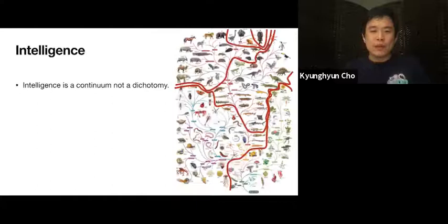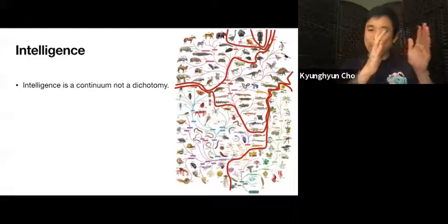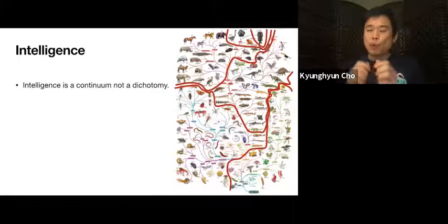Before we start our lecture on natural language processing, let's think about intelligence a bit. The first thing that we need to think about intelligence is that it is not a dichotomy. That is, it's not that one organism is intelligent while all the others are not. It's more of a continuum.